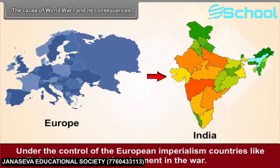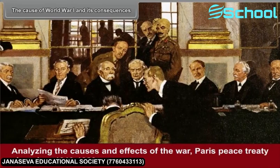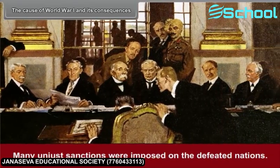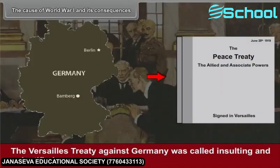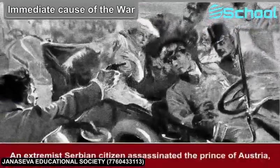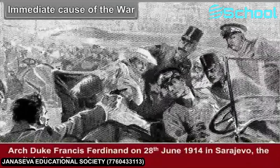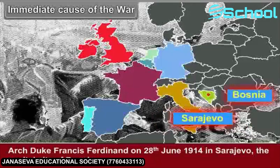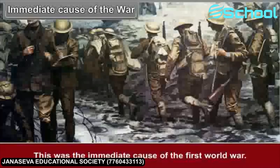Under the control of European imperialism, countries like India had an unwanted involvement in the war. Analyzing the causes and effects of the war, the Paris Peace Treaty was signed in 1919-1920. Many unjust sanctions were imposed on the defeated nations. The Versailles Treaty against Germany was called insulting and unjustified. The immediate cause of the war was that an extremist Serbian citizen assassinated the Prince of Austria, Archduke Francis Ferdinand, on 28th June 1914, in Sarajevo, the capital city of Bosnia.